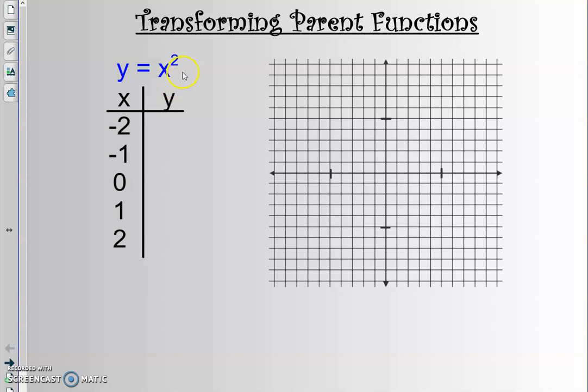So in Algebra 1, if you had to graph a parabola, my guess is you made an xy table, and you plugged in values for x, and these are usually your starting five numbers. A couple negatives, zero, and a couple positives. And you plug negative two in for x, and you get four, and all these numbers pop out. And then in Algebra 1, you'd graph these points.